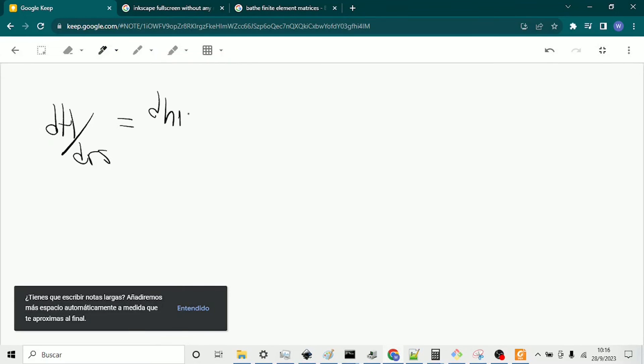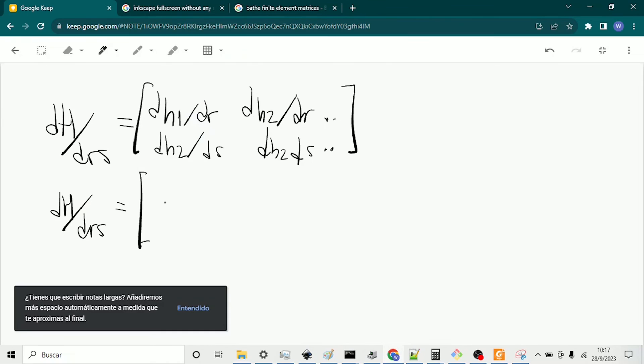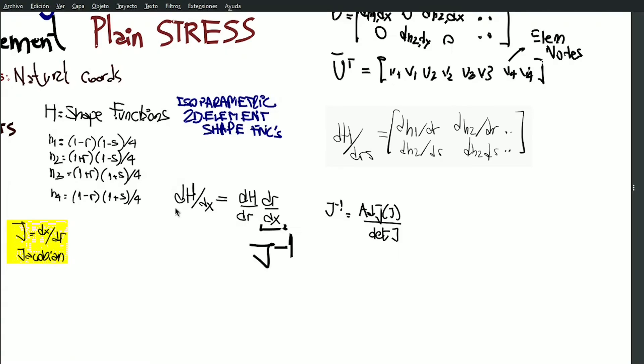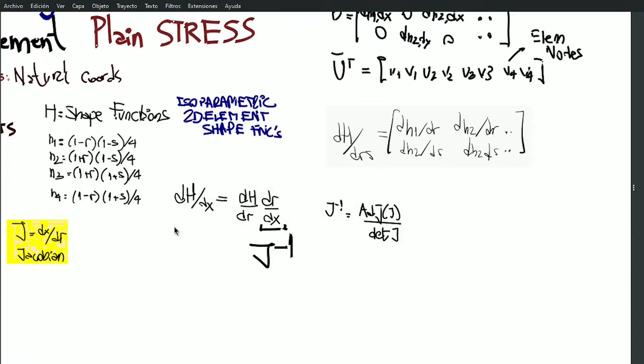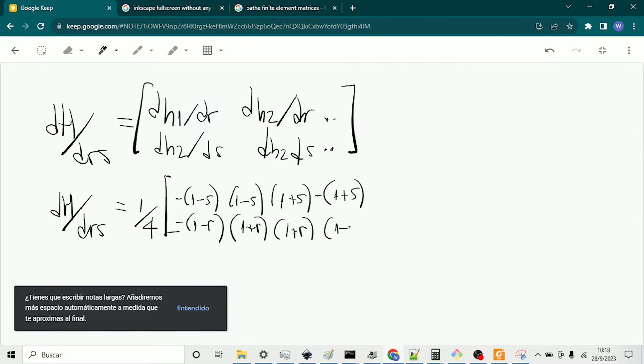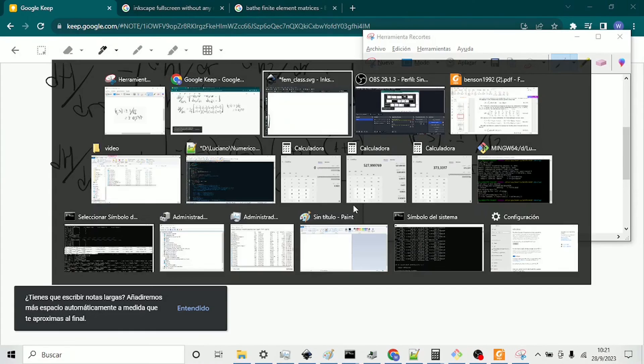In order to obtain the derivative function respect to R and S intrinsic coordinates, we differentiate each nodal function with respect to R in the first row and to S in the second. We will calculate now our function on the first integration point, which is equal to the inverse of square of 3.